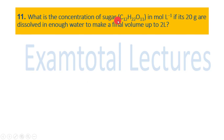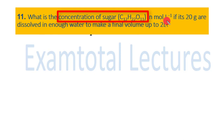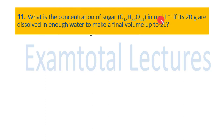Question 11: What is the concentration of sugar (formula C₁₂H₂₂O₁₁) in moles per liter if 20 grams are dissolved in enough water to make a final volume of 2 liters? We need to find the concentration in moles per liter — as seen in the last video, moles per liter means we need to find molarity.